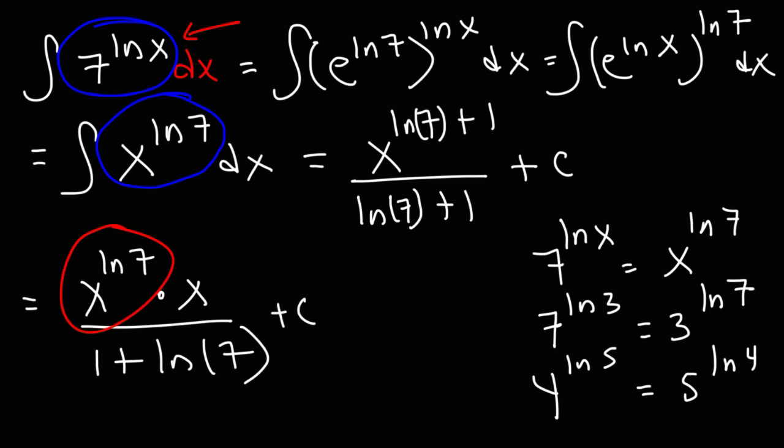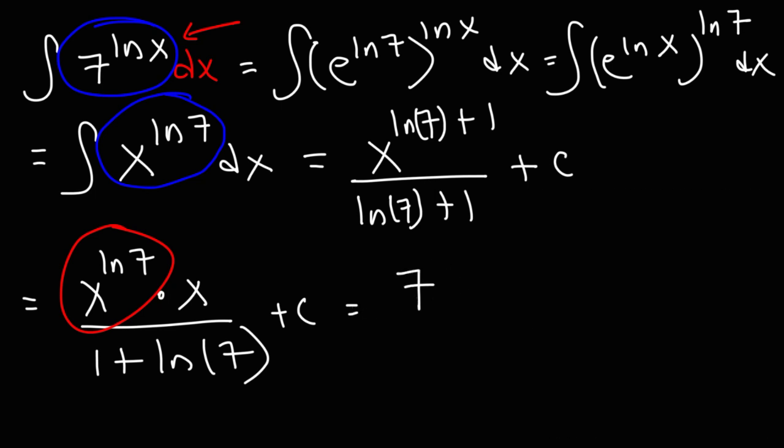So thus, our final answer for this problem is going to be 7 raised to the ln x, times x, divided by 1 plus the ln 7, and then finally, plus the constant of integration c.